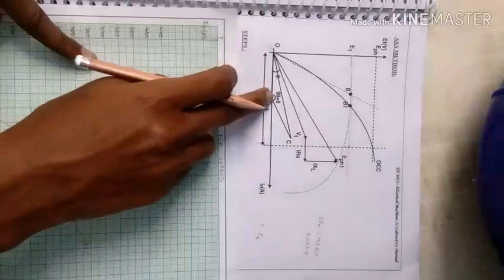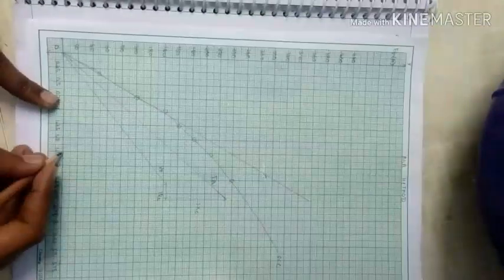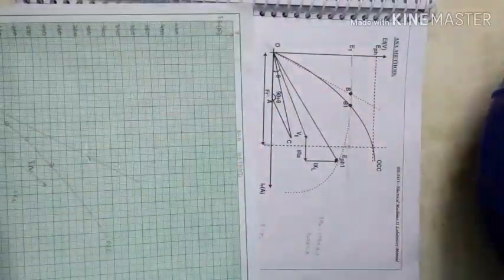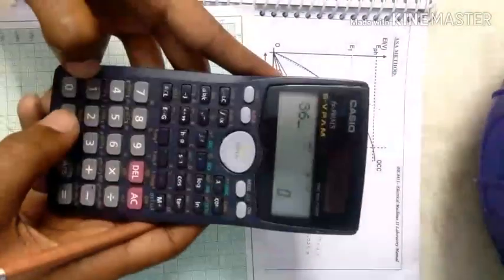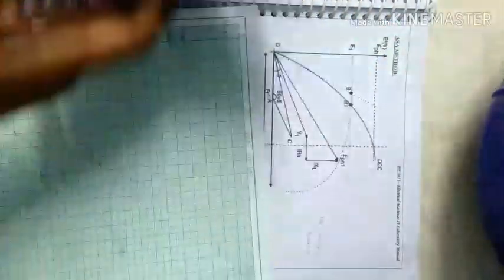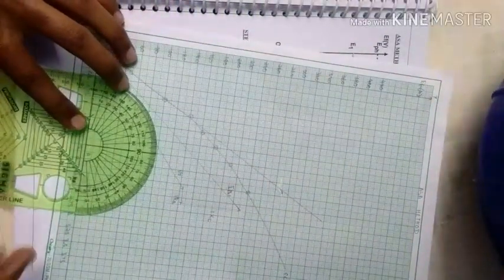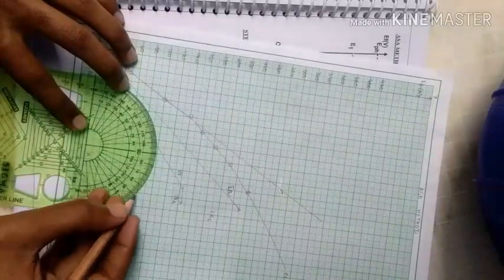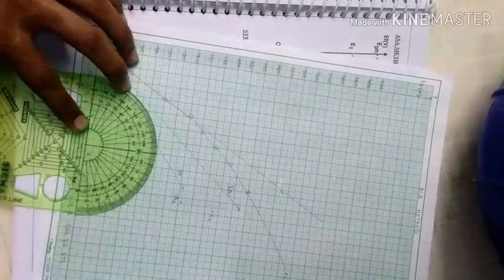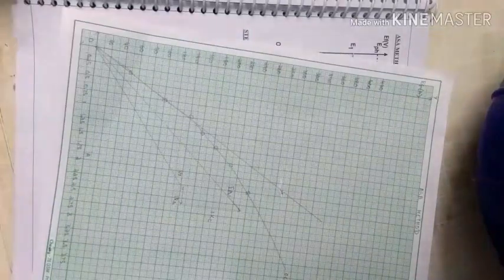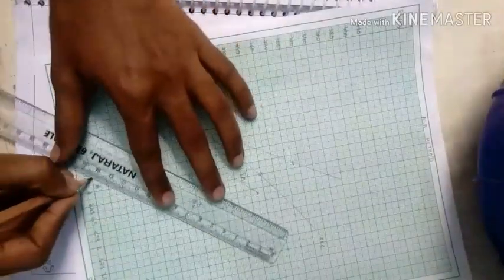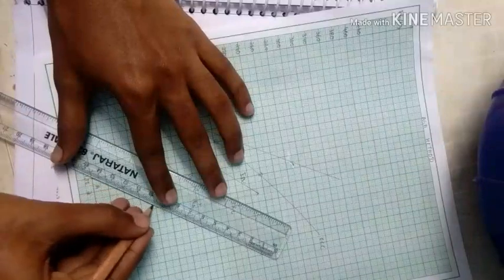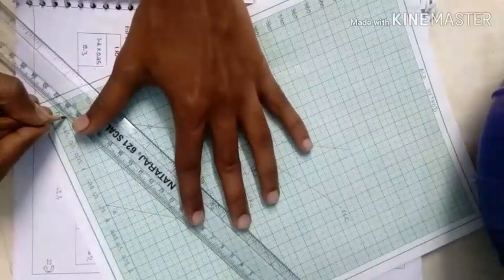Now again take a protractor. We are going to measure this point, this is the short circuit current, that is 1.75. Now take 90 plus theta, that is theta value is 36.86 plus 90 equals 126.86. Take the protractor and measure 126.86, join the line, and then join the origin and this point.